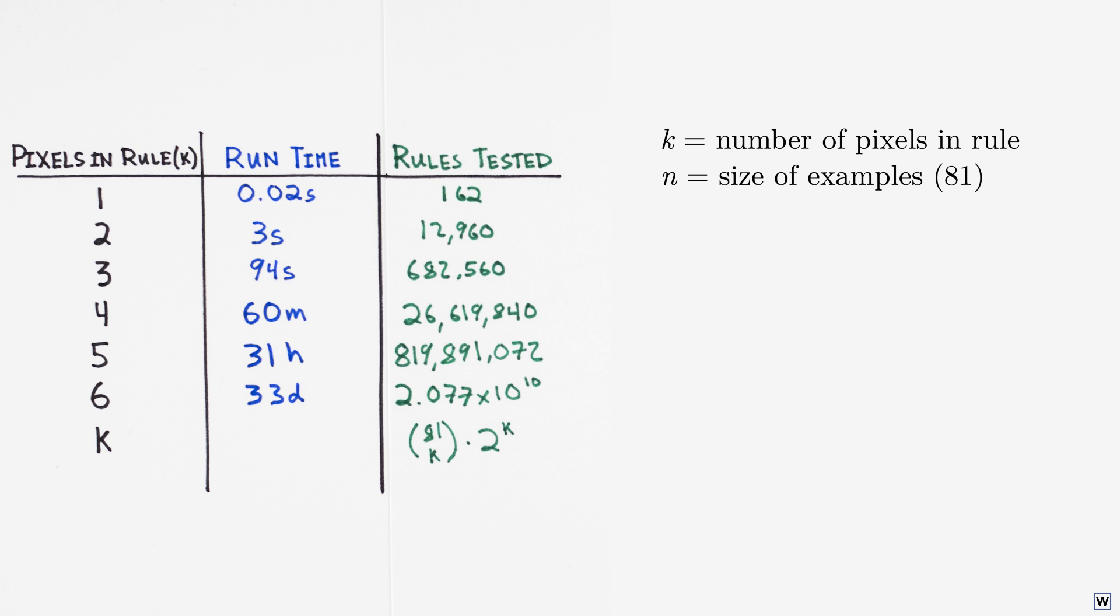Also, the time required to run our algorithm should depend on the number of examples we test our rules on. Let's call this m. Now, how does the time required to run our algorithm change with respect to k, n, and m?